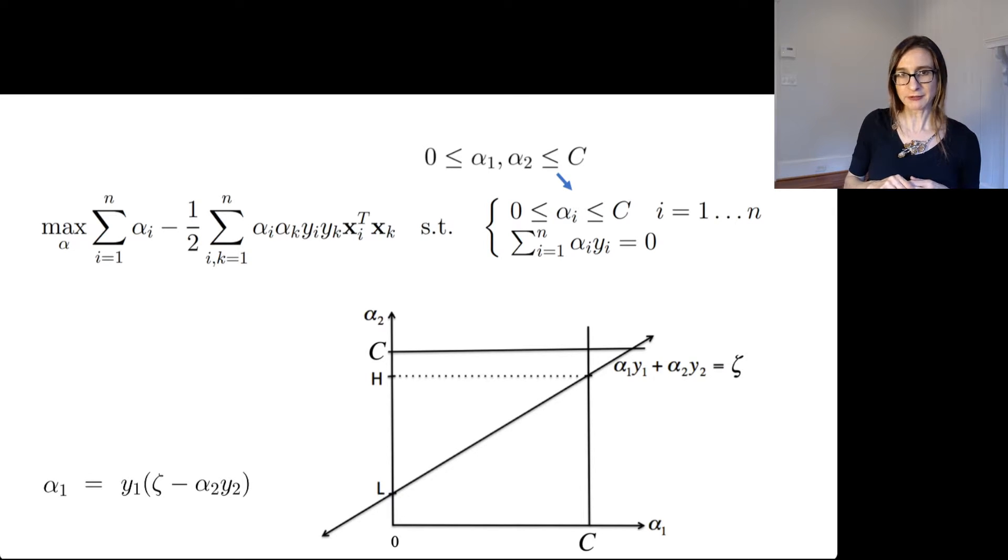So if I let alpha 1 vary within its full range of 0 to C, because all the alphas are bounded between 0 and C, so if I let alpha 1 vary within its full range, then alpha 2 can only vary between the high and the low value, H and L, over here. So if I choose alpha 2 to be between H and L, that will tell me exactly what number alpha 1 is, and it will be feasible. It will be between that range 0 to C.